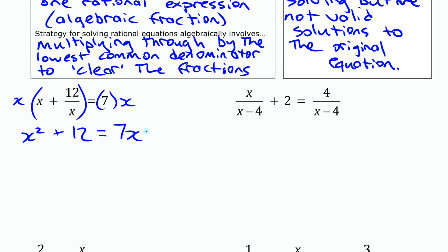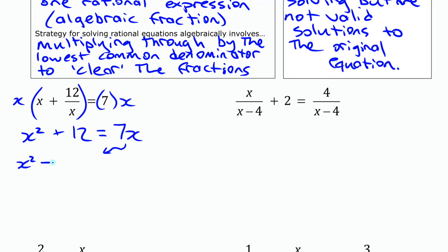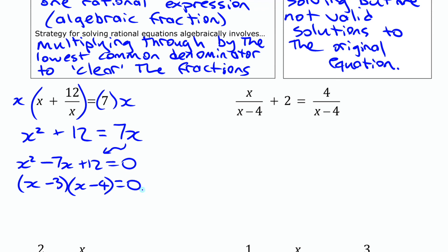Now we need to think about what kind of equation this is. It has an x squared and an x term, so you can't solve it by isolation — you'll need to use factoring or the quadratic formula. Put everything on one side: x squared minus 7x plus 12 equals 0. That factors to x minus 3 times x minus 4 equals 0, giving solutions x equals 3 or x equals 4.